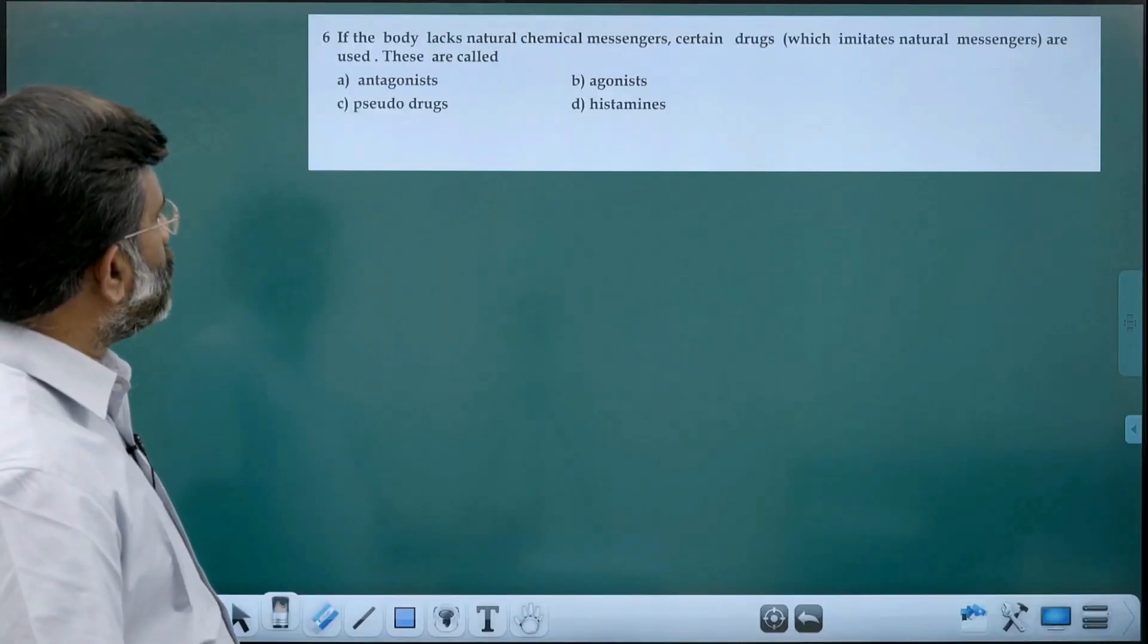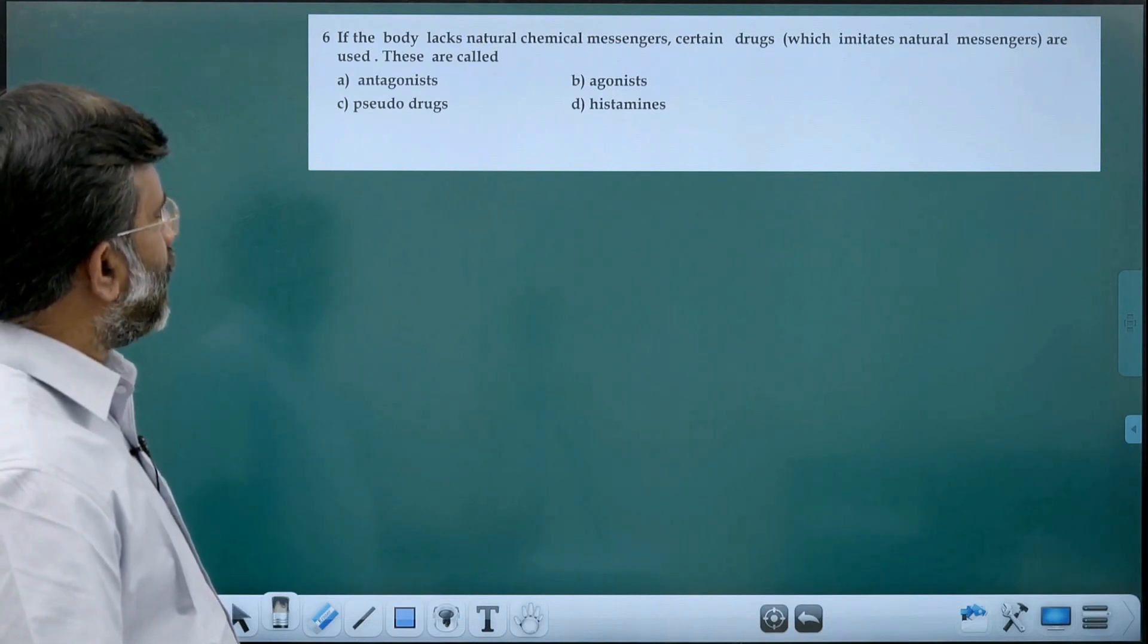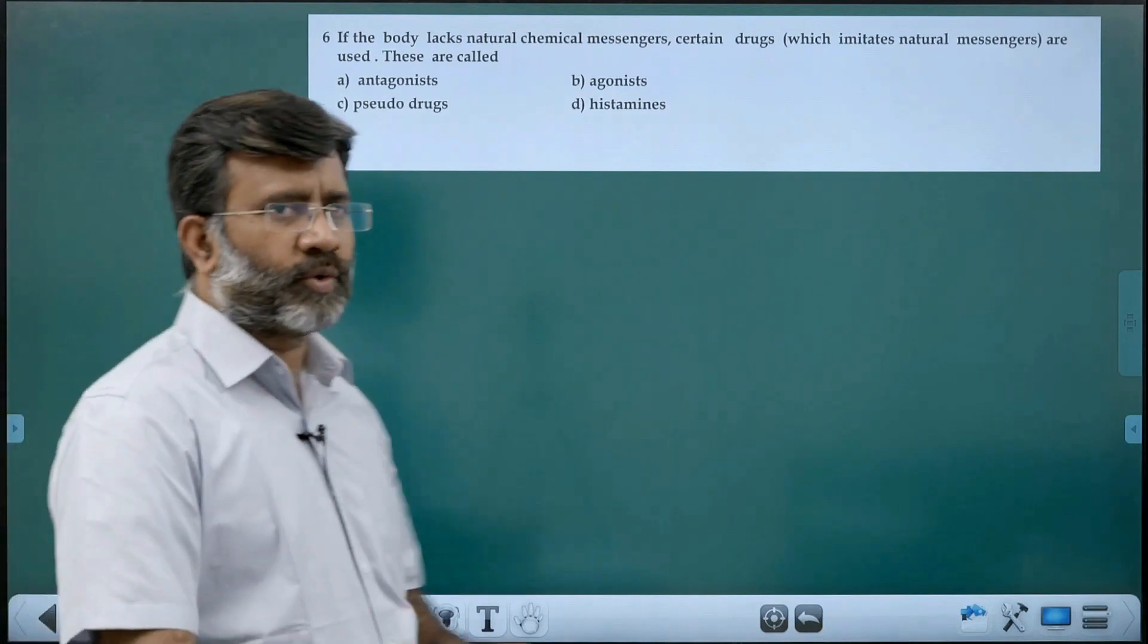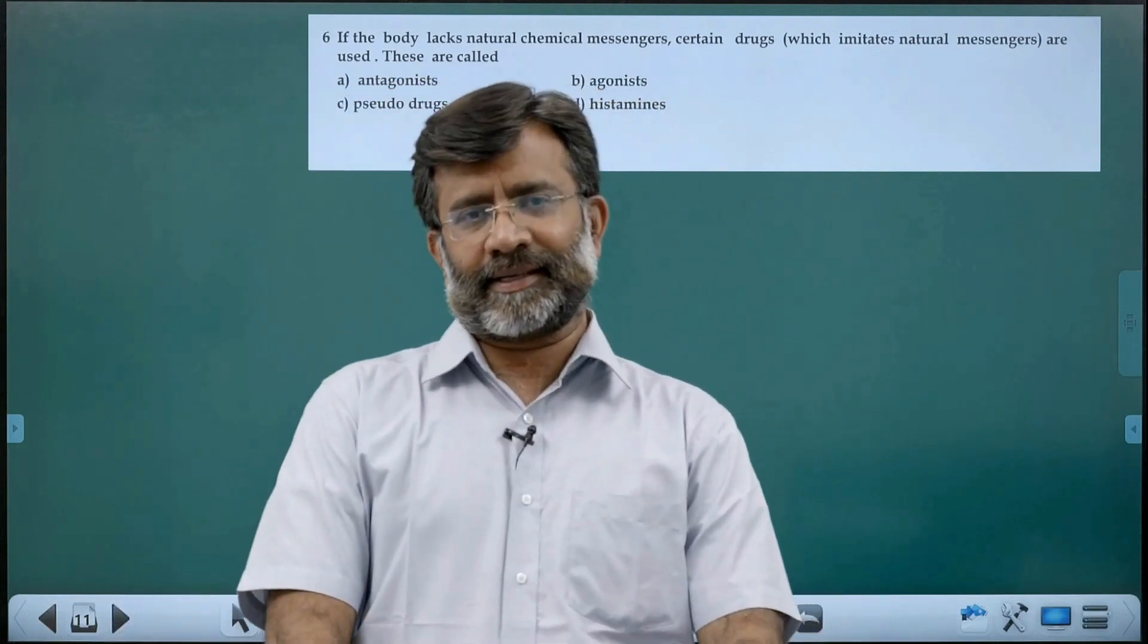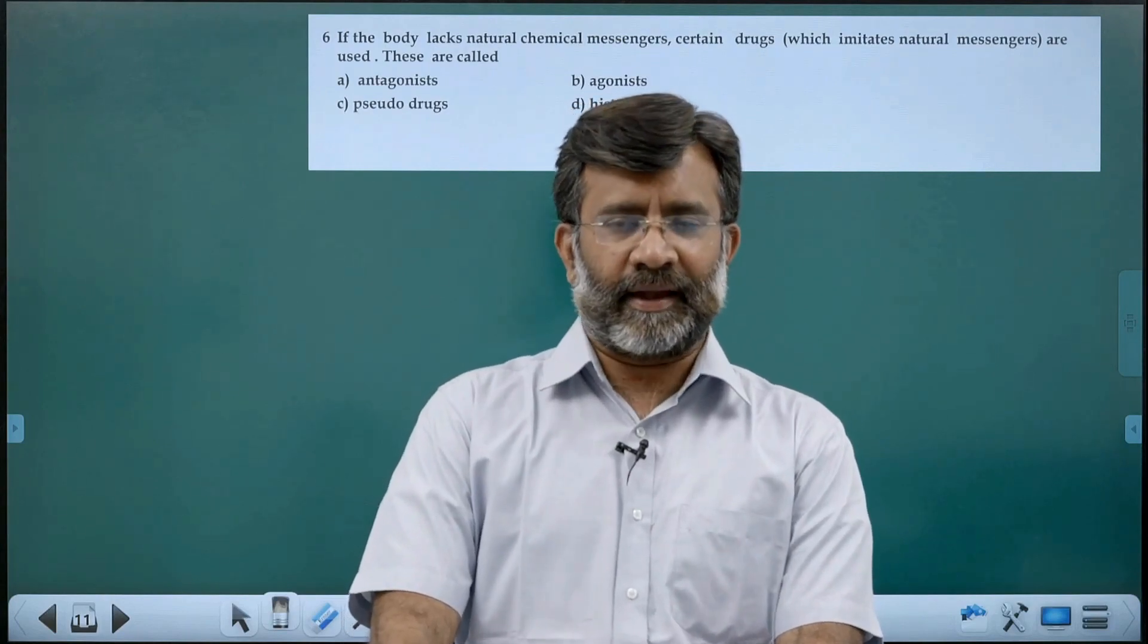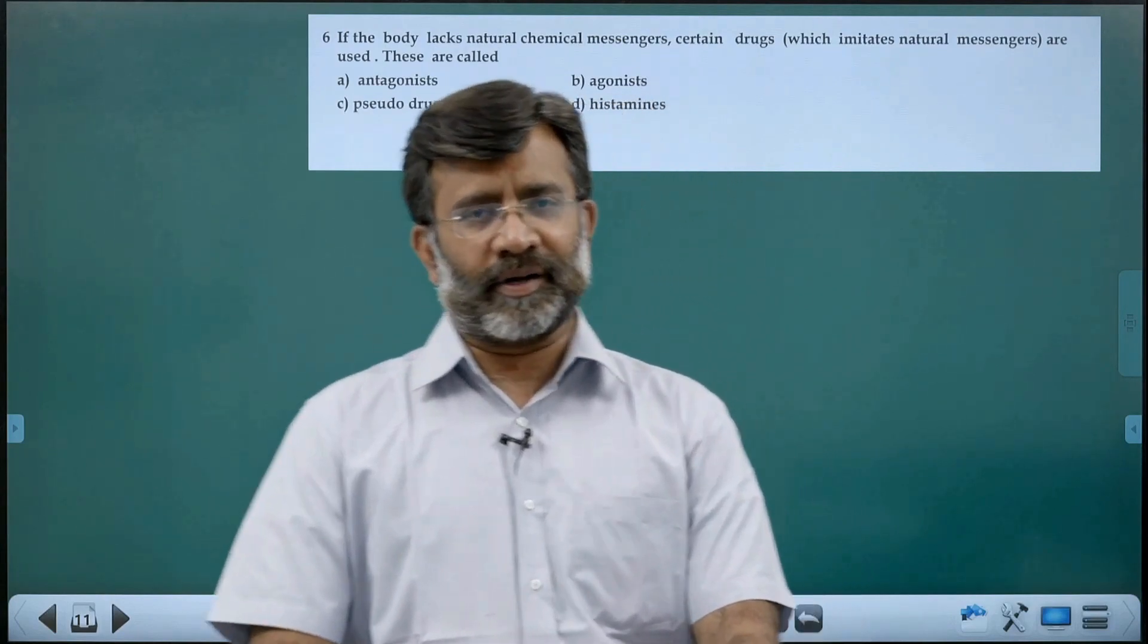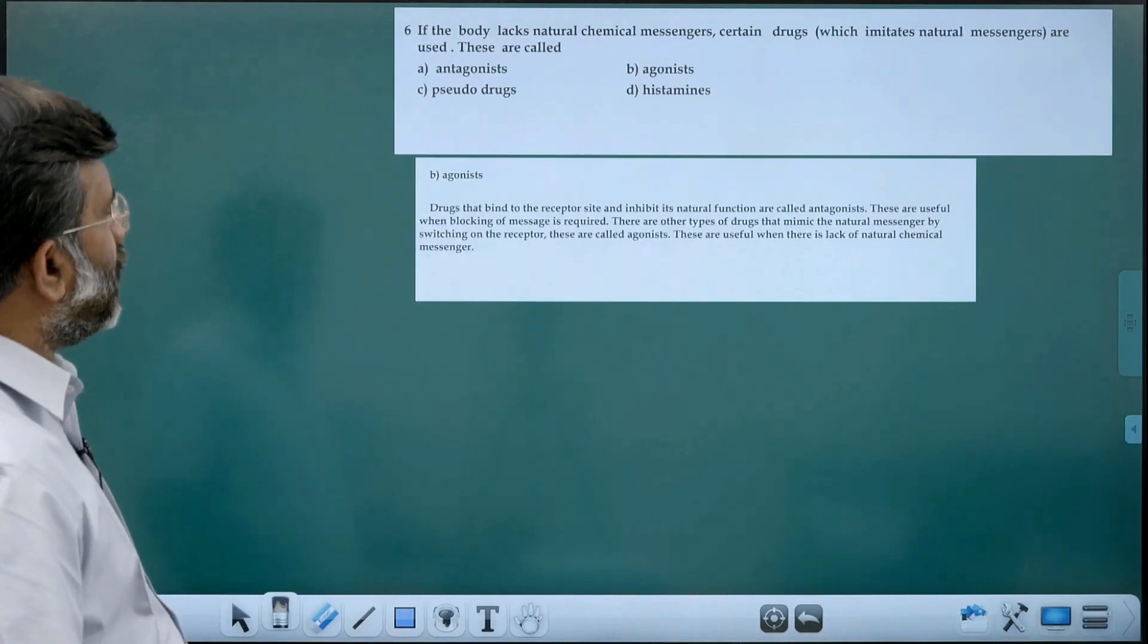Lack of natural chemical messenger. Certain drugs imitate natural messengers. See, two types of chemicals you are learning in the textbook: agonist and antagonist. Right, so which one is mimicking? We are talking about mimicking.